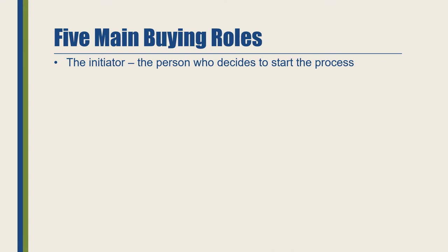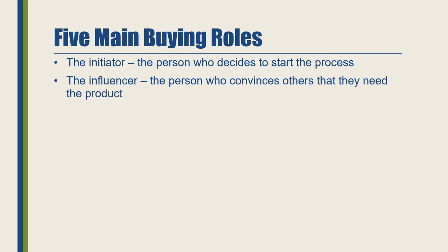For example, a small child tells his parents he wants a remote-controlled toy car for his birthday — in this case, he is the initiator. The second role is the influencer, the person who convinces others that they need the product. Here, the child is influencing his parents, but behind the scenes, the child himself was influenced — perhaps by a TV ad, by friends, by a window display, or by something he saw at a mall.